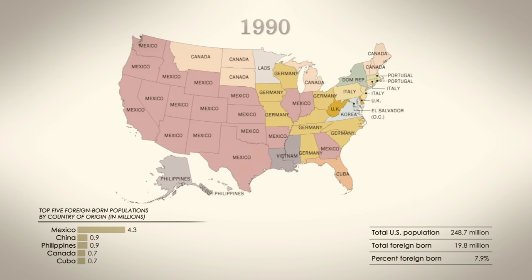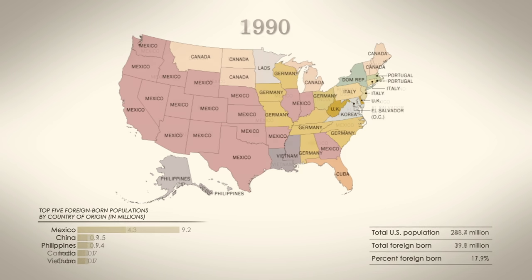And in 1990, America began to look like the diverse country we live in today. Mexico was tops in 18 states, Dominicans were the largest group coming to New York, and South Korea and Southeast Asian nations were the leading countries of origin in 7 states.